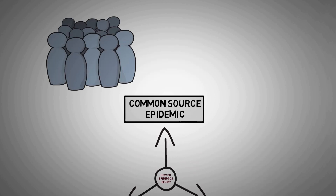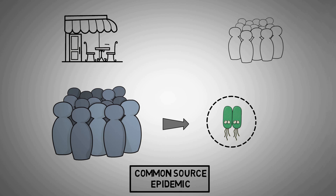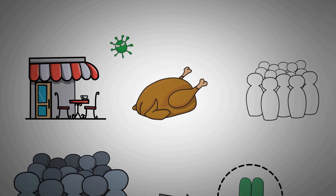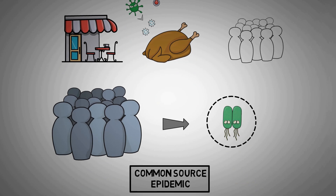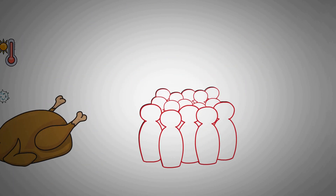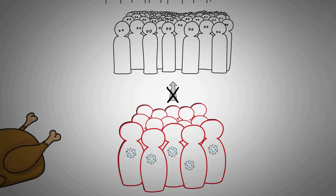In a common source epidemic, a group of people get infected from a common source of infection. For example, suppose a bunch of people ate at a restaurant and the food was infected with the staph bacteria toxin. Note that food poisonings are not caused by the bacteria itself, rather the toxin produced by the bacteria. The bacteria itself gets destroyed by the cooking process. All these people developed food poisoning, and this is an example of a common source epidemic.